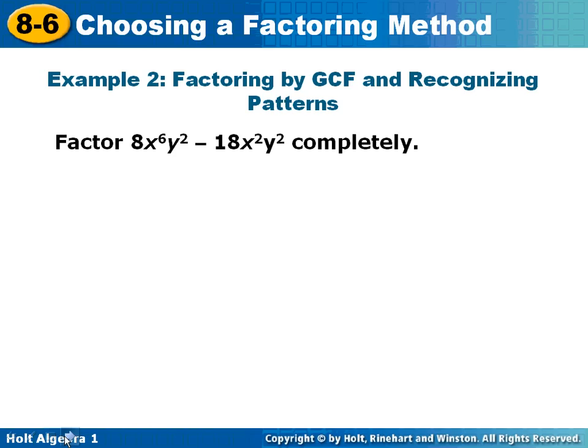Number 2. We need to factor this completely. The first thing I always try to do is greatest common factor. Between 8 and 18, the greatest common factor is a 2. x to the 6th and x squared. The most I can take out is x to the 2nd. y squared and y squared. I'm going to take out a y squared.